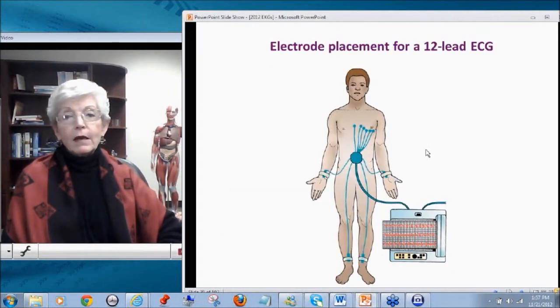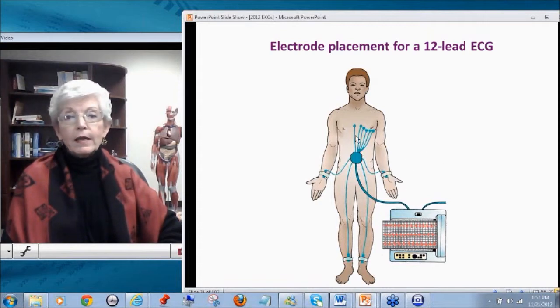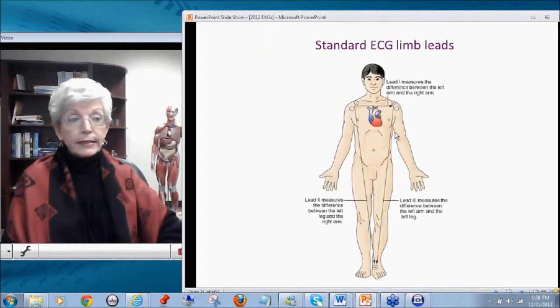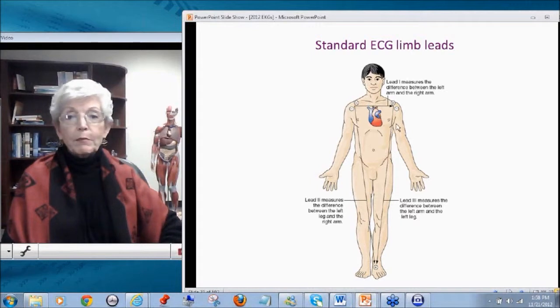So again, placement for a 12-lead EKG is four limb leads, one on each arm, one on each leg, and the six precordial leads. We'll talk about what they are. Our standard limb leads, remember we saw this on Da Vinci's Man. The standard limb leads are called Leads 1, 2, and 3.